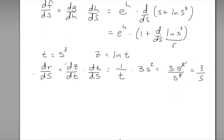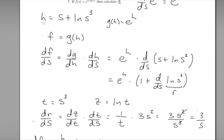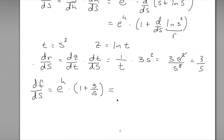Looking back at the original question, df by ds equals e to the power of h times 1 plus 3 over s, since the derivative of r with respect to s is 3 over s. Now f was a function of s, so we don't want h's in the answer. We need to replace h with its actual expression in terms of s: h was s plus ln of s cubed. So the final answer is e to the power of s plus ln of s cubed, times 1 plus 3 over s.